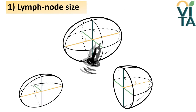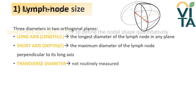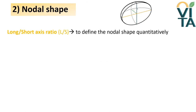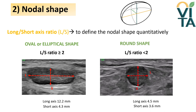Rotating the probe 90 degrees clockwise, the transverse plane of the lymph node is obtained. Here the transverse diameter can be seen, but it is not routinely measured. The nodal shape can be defined from a quantitative point of view using the long-short axis ratio, also called the length-depth ratio. Traditionally, an oval or elliptical shape corresponds to a long axis at least two times greater than the short diameter, while round lymph nodes have an L/S ratio less than 2.